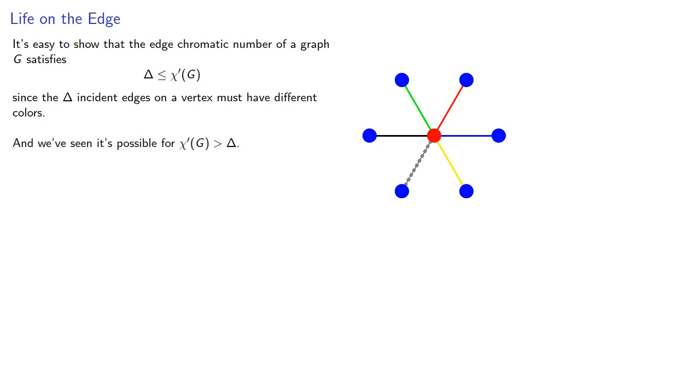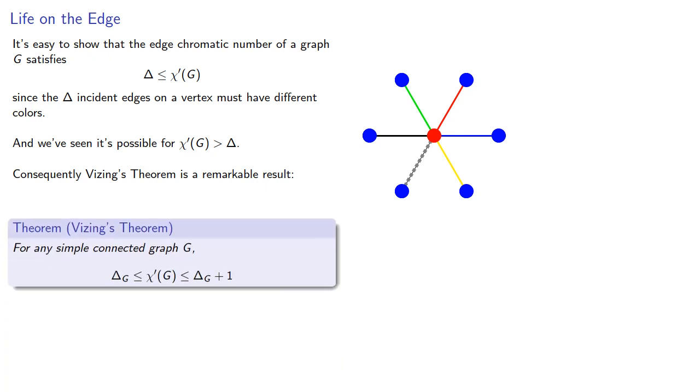Consequently, Vizing's theorem, discovered by a Ukrainian mathematician named Vizing, is a remarkable result. For any simple connected graph, the edge chromatic number is either the greatest degree or the greatest degree plus one.